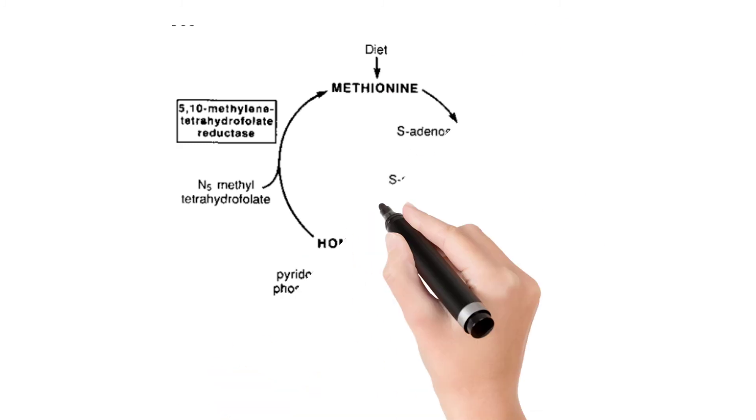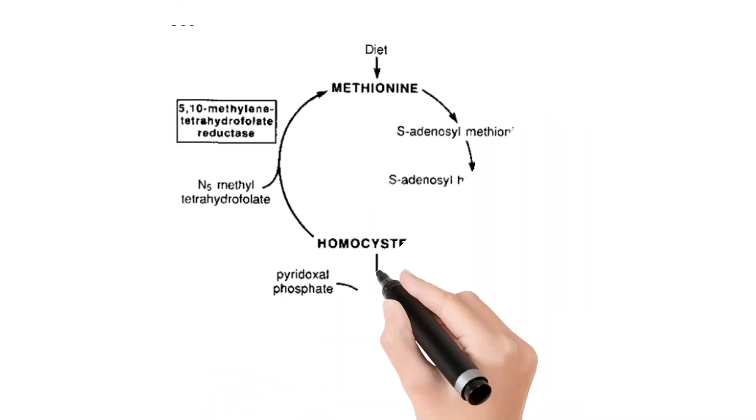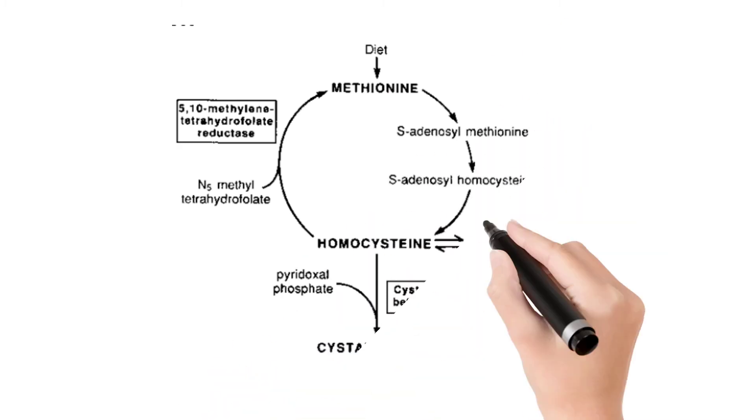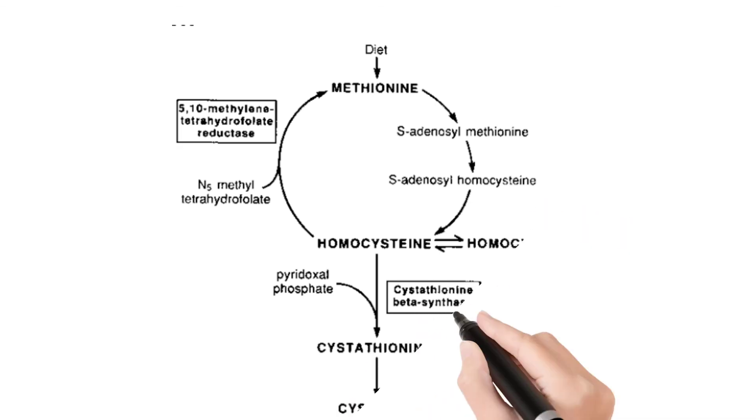This cystathionine is converted to cysteine by cystathionase enzyme. So when cystathionine beta synthase is defective, cysteine formation is not occurring, so cysteine has to be supplied in the diet.